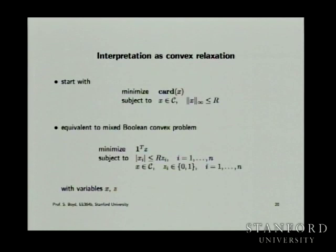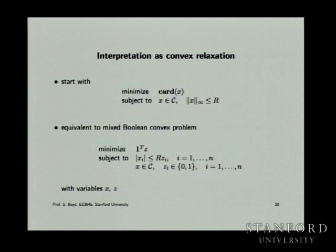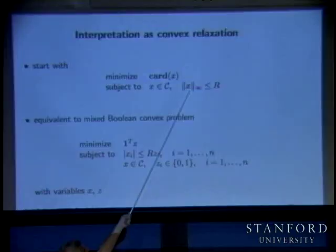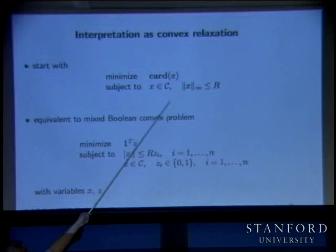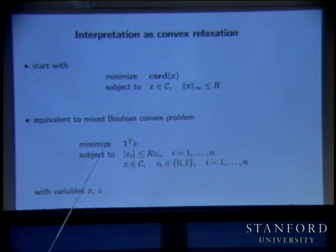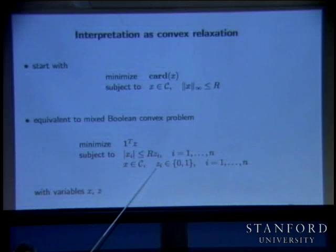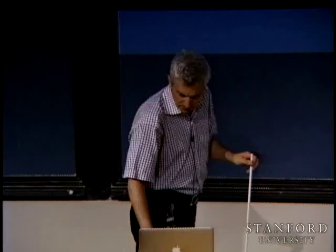We can interpret the L1 norm heuristic as a relaxation. We can make it a relaxation of a Boolean convex problem. We introduce Boolean variables z, which are indicators telling you whether each component is zero or non-zero, and enforce that the absolute value of x_i is less than r·z_i, where r bounds the infinity norm of any feasible point. This gives a Boolean convex problem, where everything is convex in the variables x and z, except that the z's are 0-1.